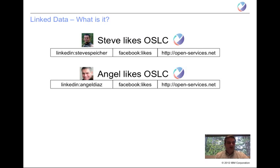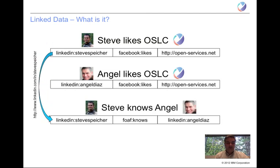But you may then wonder, what else can I learn about Steve or about OSLC? Well, since these URIs happen to be HTTP URIs, we can do things like a GET on the information and get more back about Steve. If we do a GET on the URL to information hosted at LinkedIn about me, you may learn that I know Angel, where I work, who I work for, other relationships I may have, previous employers, and other projects of interest.